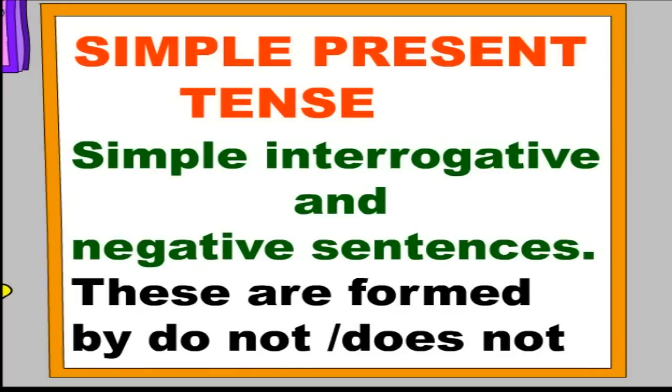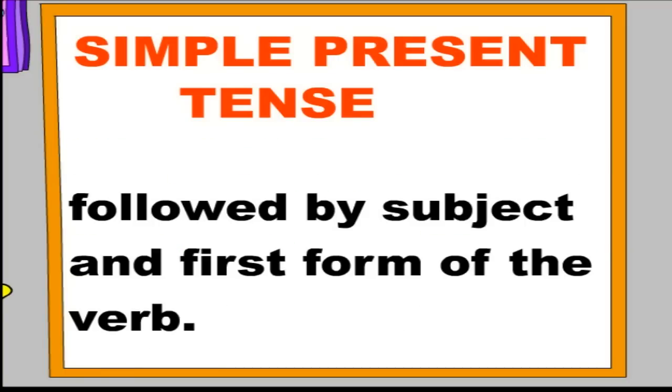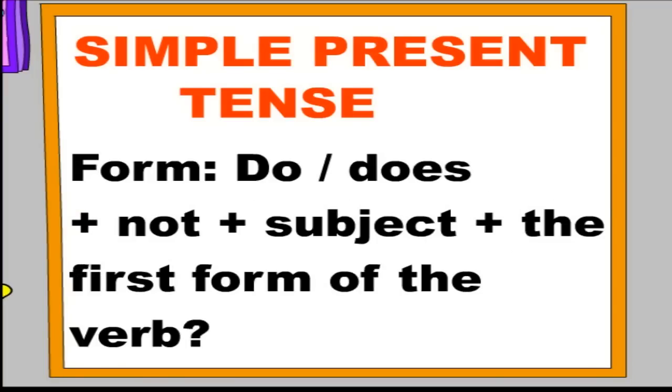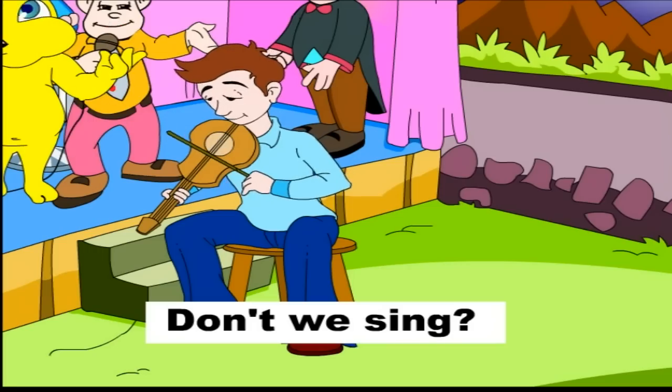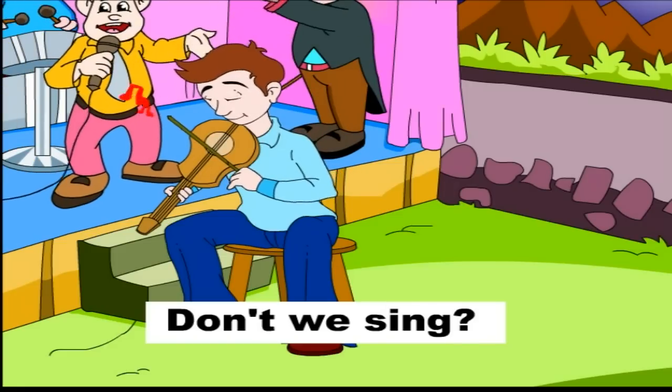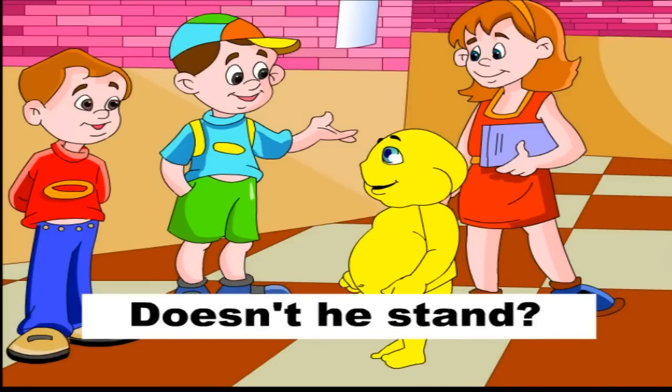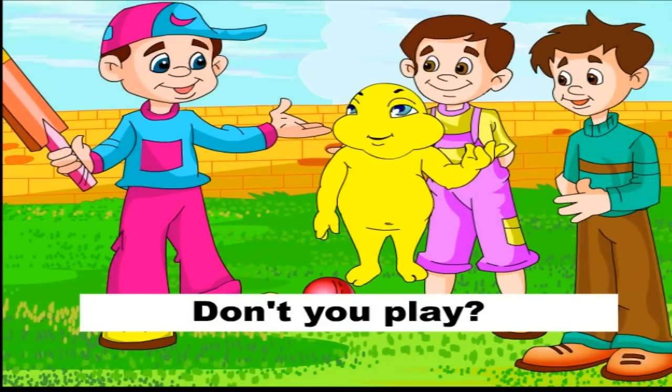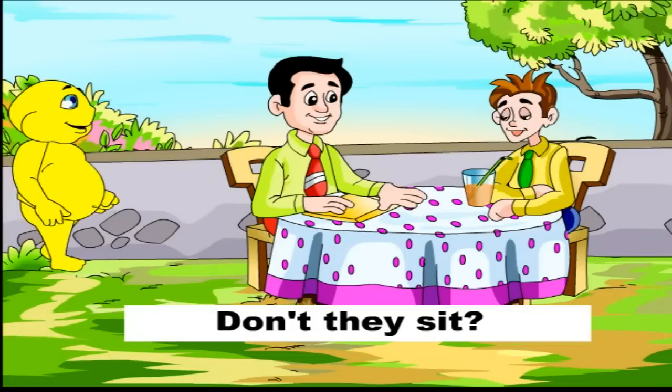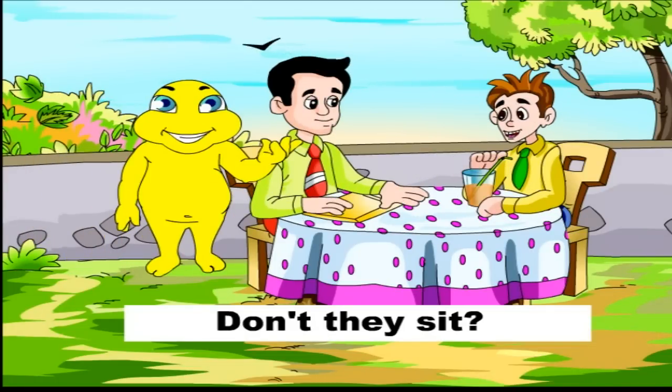Simple interrogative and negative sentences. These are formed by do not or does not, followed by subject and first form of the verb. Form is do or does, plus not, plus subject, plus the first form of the verb. Examples: Don't I read? Don't we sing? Doesn't he stand? Don't you play? Don't they sit?